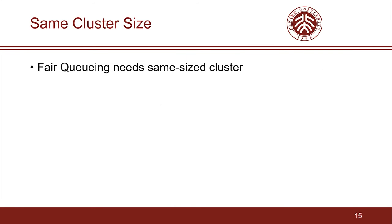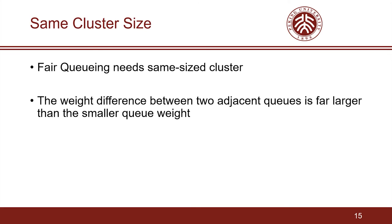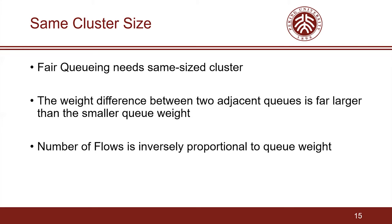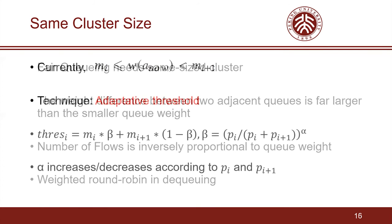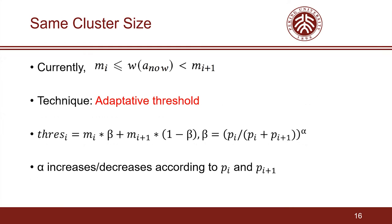For fair queuing, we need clusters of the same size. Considering the highly skewed network traffic, our insight is that the weight difference between two adjacent queues is far larger than the smaller queue weight. Therefore, the number of flows in the cluster is approximately inversely proportional to queue weight. To achieve fair queuing, the dequeuing policy should be weighted round-robin. We propose a technique called adaptive threshold to adjust the threshold based on the cluster size. The parameter alpha will increase or decrease according to the sizes of two adjacent clusters to control them to equal size.